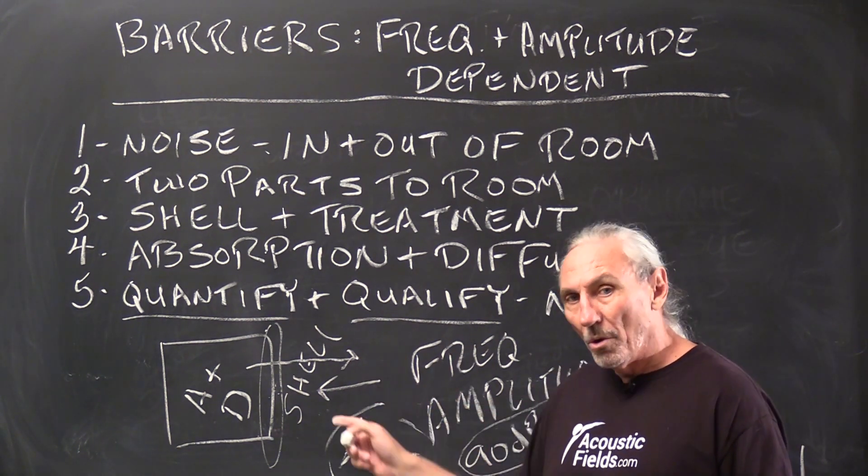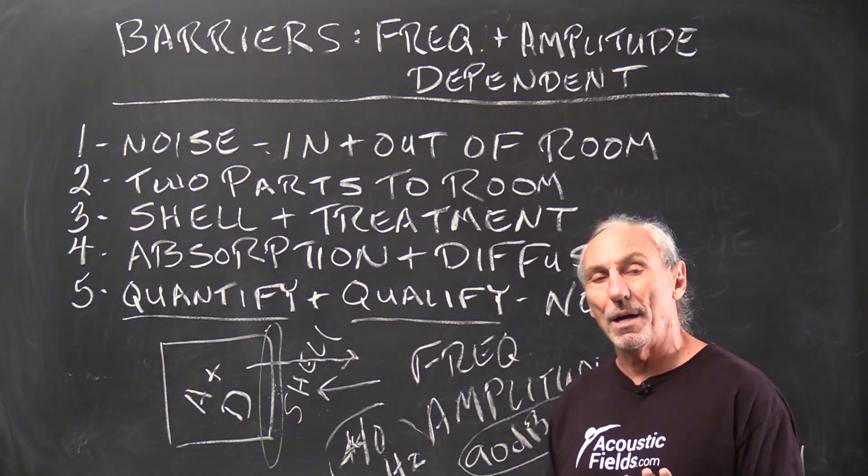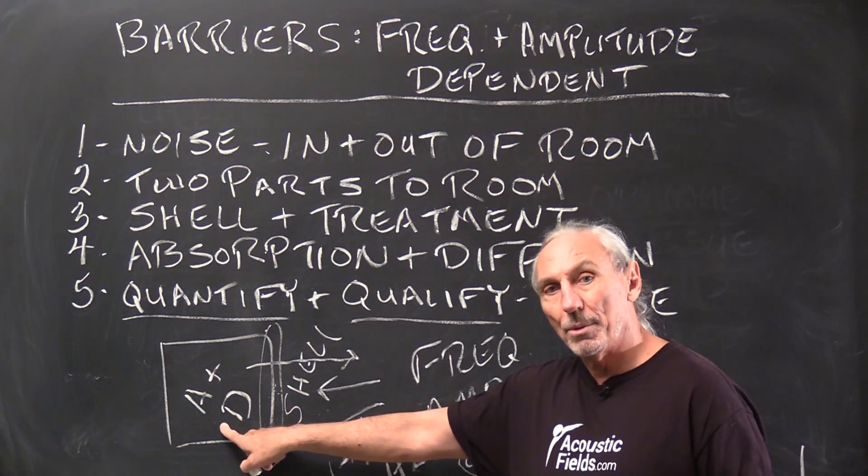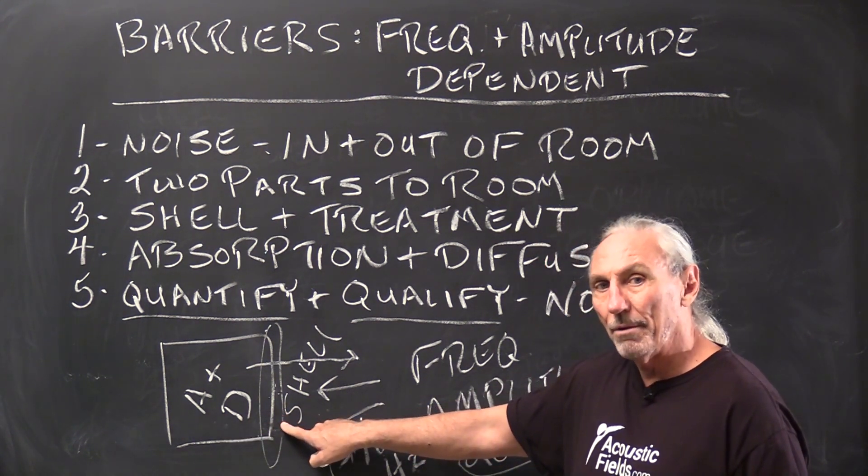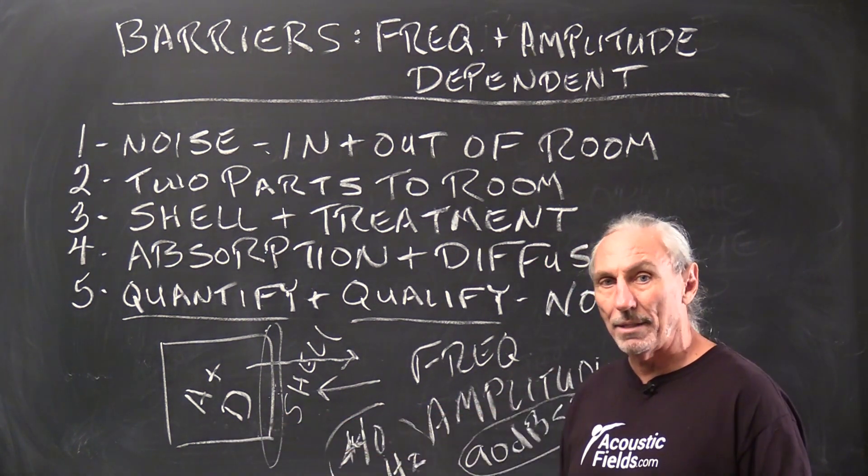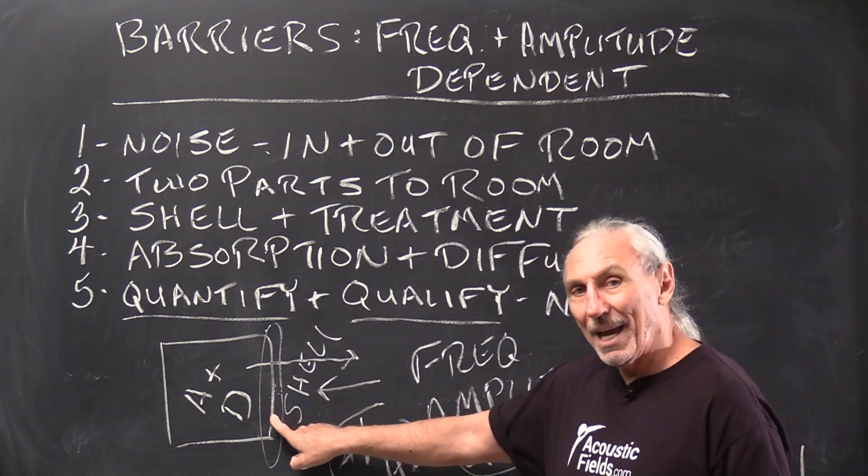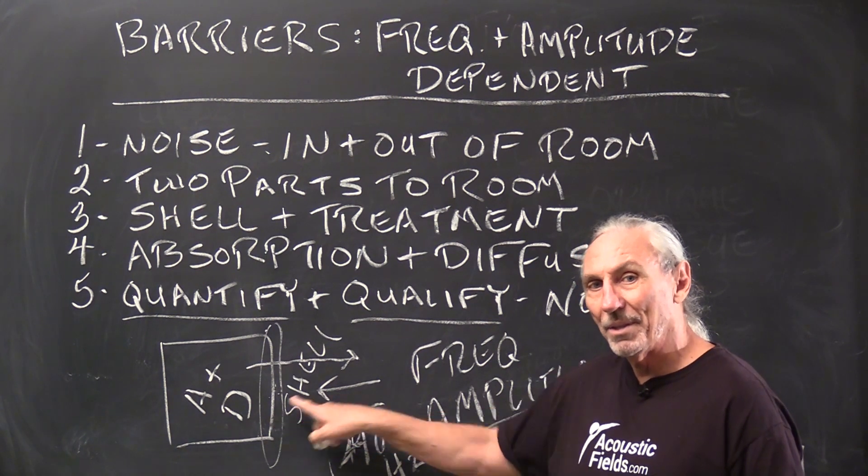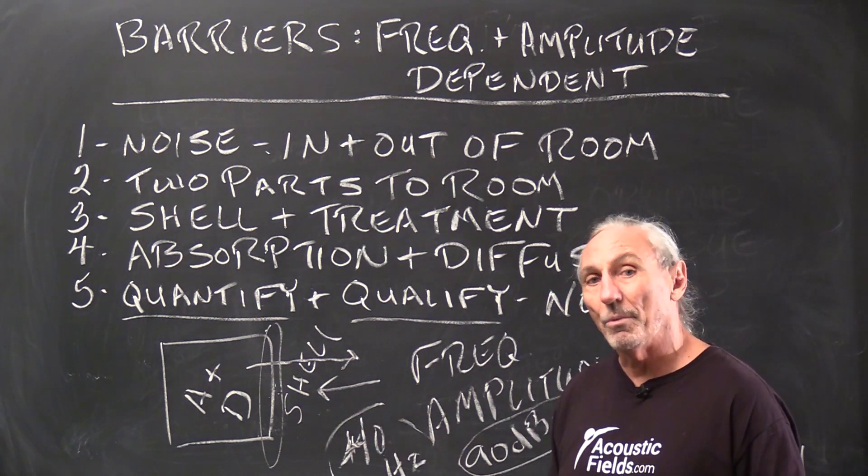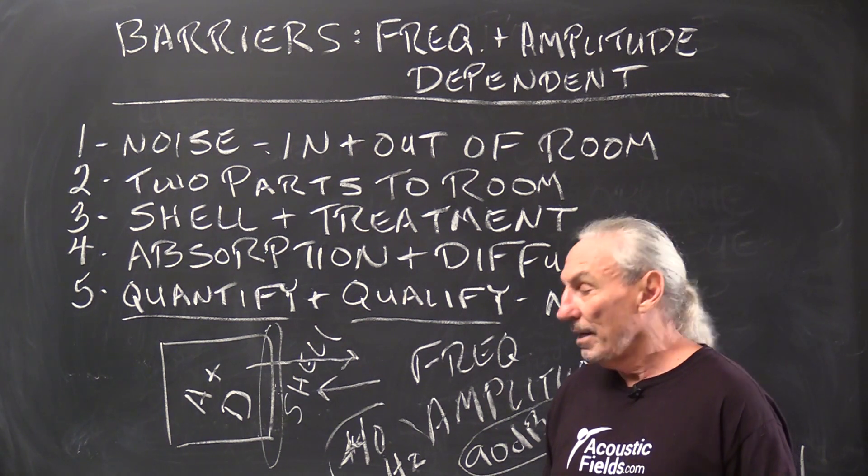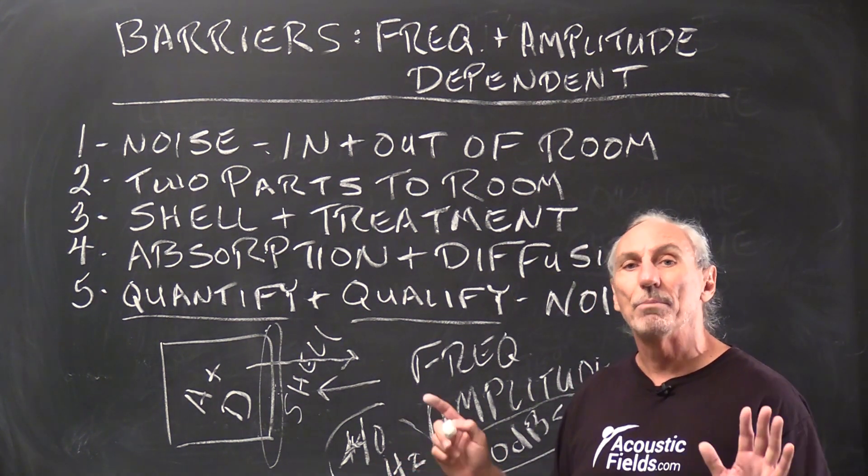And remember noise technology, building barriers is four to five times more expensive than absorption and diffusion in our rooms. So we have to be very careful here with the noise. We don't want to guess. We don't want to make mistakes. Because if we guess and we build something without measuring first we may have to tear it down, start over. We may not be able to fix it. And it happens all the time. And I try to tell people measure, measure, measure.